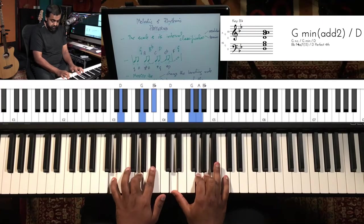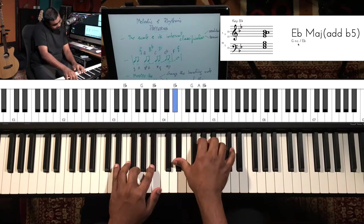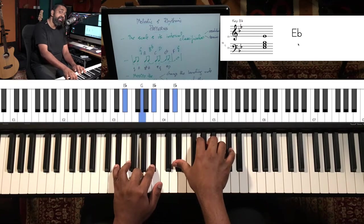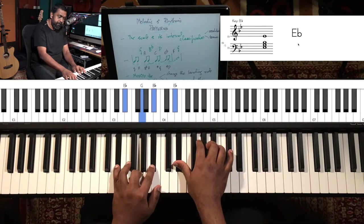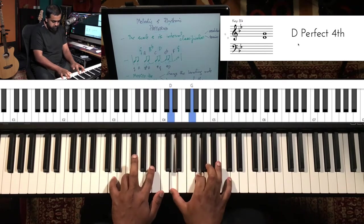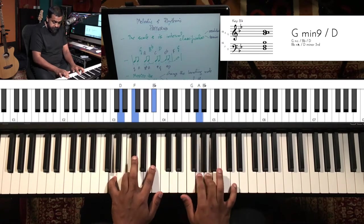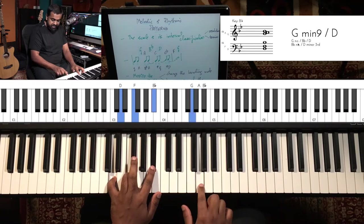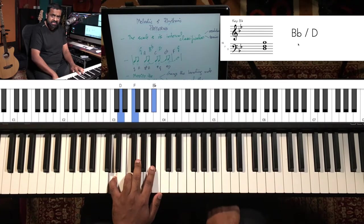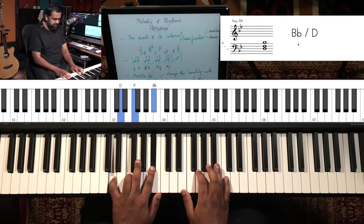G minor with the landing D, then Eb. Now let's see what we can do for the next chord — Bb major, the one. That note's a little annoying, right? We're playing that G quite often.